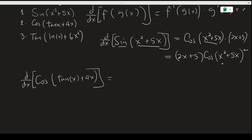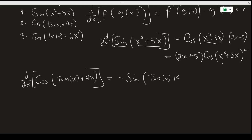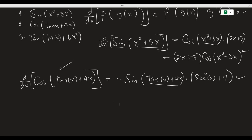The outside function here is cosine and its derivative is sine. Then we keep the inside function the same, tangent x plus 4x, and multiply it by the derivative of the inside function. The derivative of tangent x is secant squared x, and the derivative of 4x is 4. This is the derivative of this function.